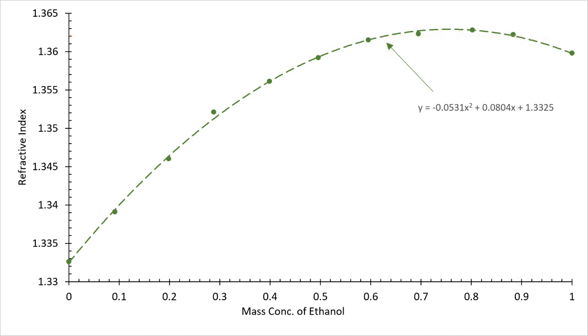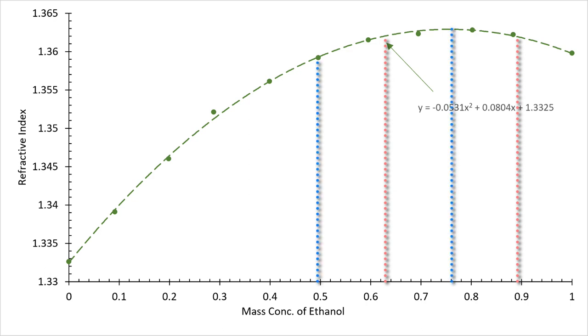When the sample is diluted and measured again, let's suppose the index is now 1.363. The concentration of ethanol was reduced, which would mean the concentration is offset somewhere to the left.